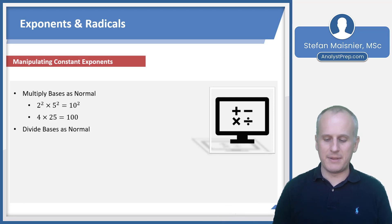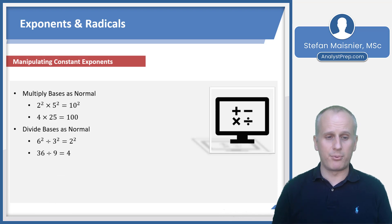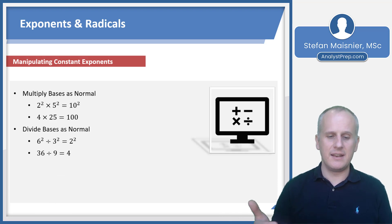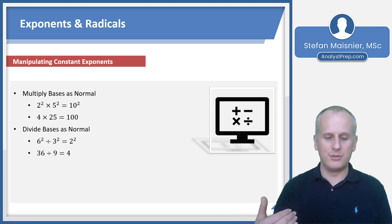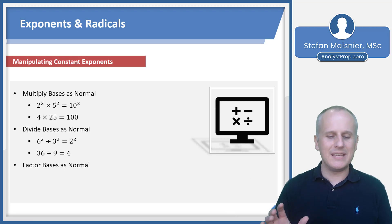Similarly, you can divide the bases as normal when exponents are the same. Six squared divided by three squared is just two squared. Six squared is 36, three squared is 9, and two squared is 4. Indeed, 36 divided by 9 equals 4. So the same constant-exponent rule applies for division as well.